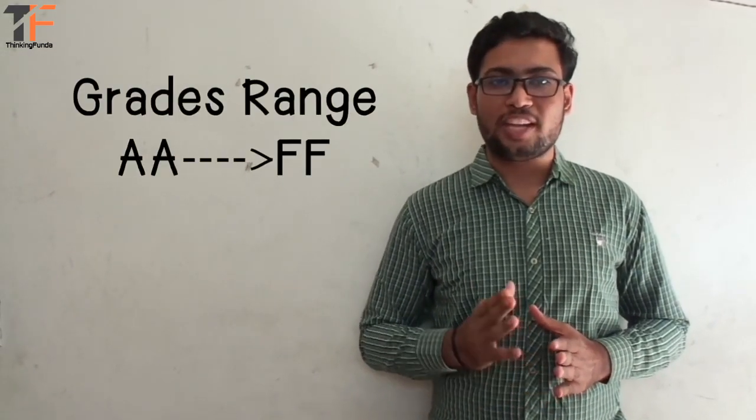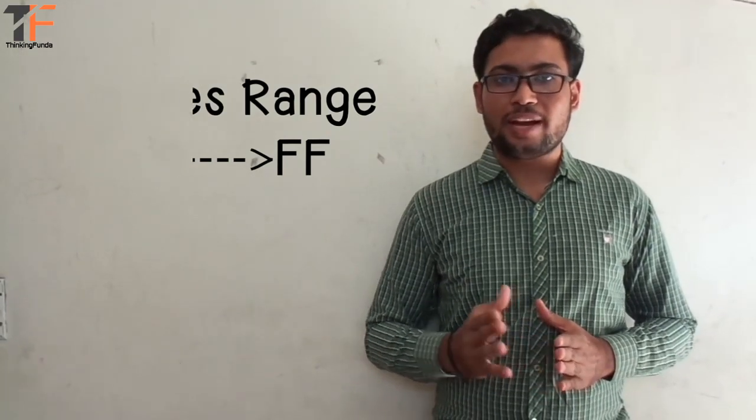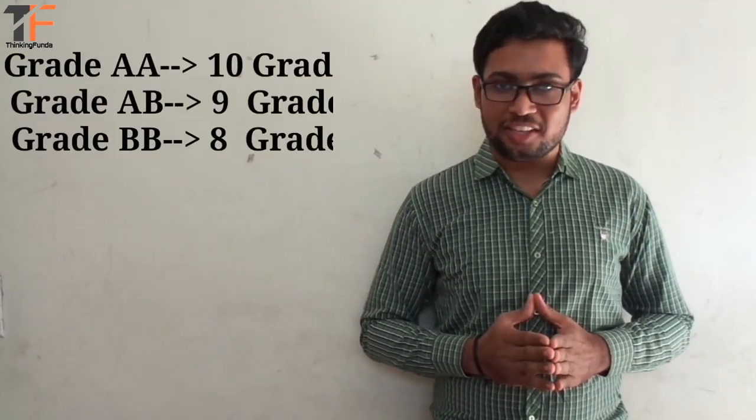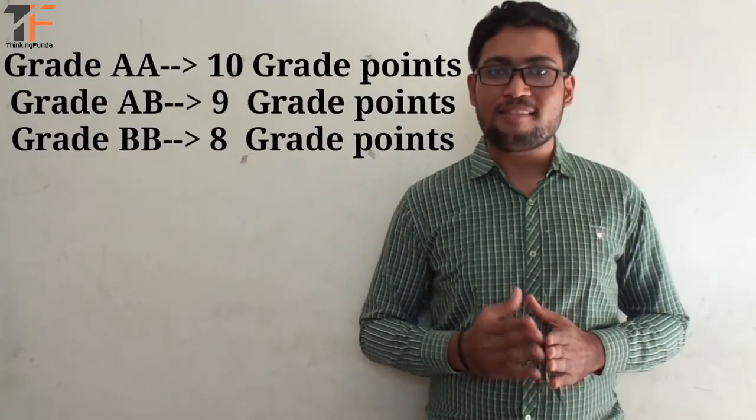Now for each subject depending upon your performance you will be getting grades. The grades will range from AA to FF. If you get AA grade then you will get 10 grade points. Similarly, for AB, 9 grade points.